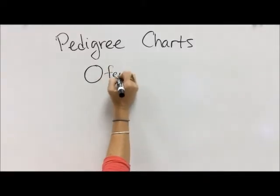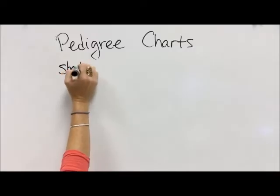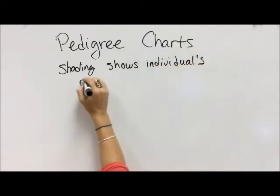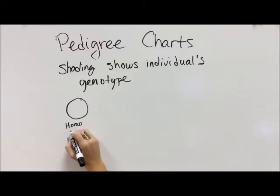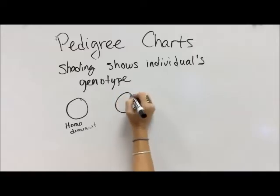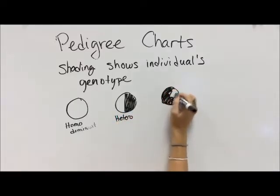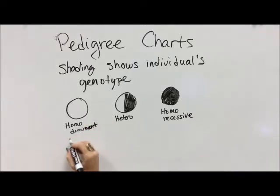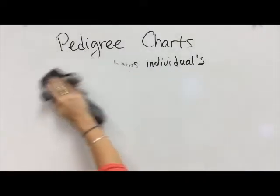There are two shapes on the chart: circles stand for females and squares stand for males. The shading of the squares and circles shows an individual's genotype — what is on their genes, which determines their phenotype, whether or not they have the trait. A blank circle or square means that person is homozygous dominant. A half-shaded symbol means heterozygous — they carry the information but don't show it. A fully shaded symbol means homozygous recessive. Heterozygous individuals are also called carriers because they have information on their genes that they don't actually show.